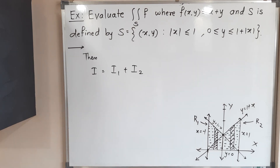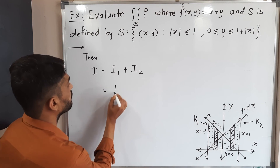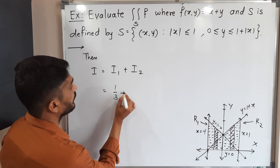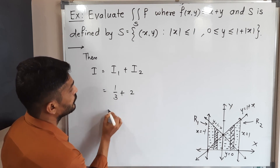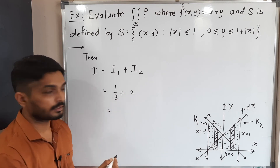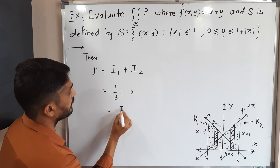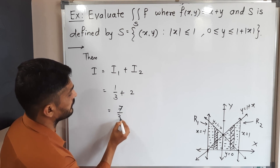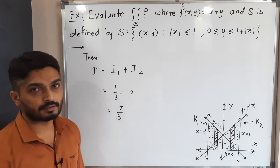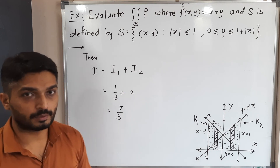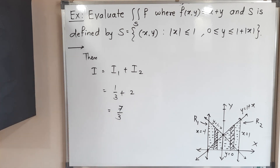The final answer is I equal to I1 plus I2 equal to 1/3 plus 2. Cross-multiplying gives 7/3. This is the required answer.